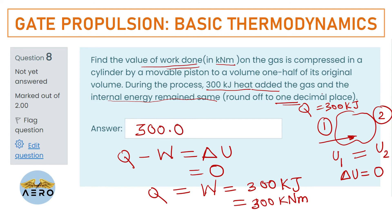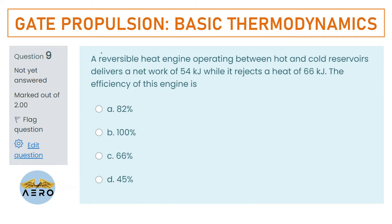A reversible heat engine operating between hot and cold reservoirs delivers a net work of 54 kJ while it rejects heat of 66 kJ. Find the efficiency of the engine.